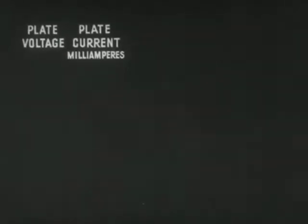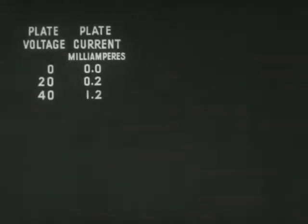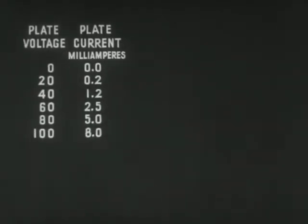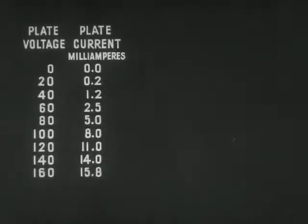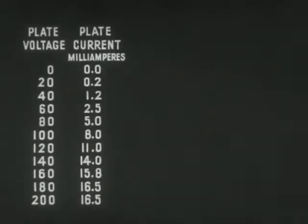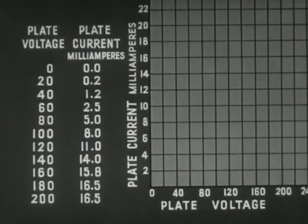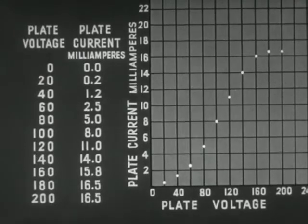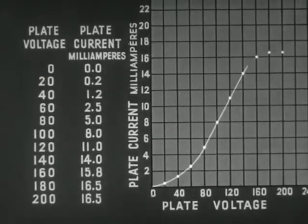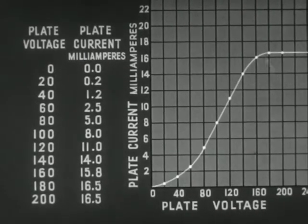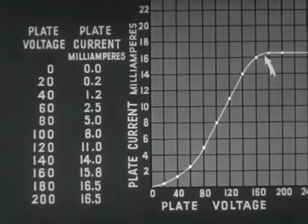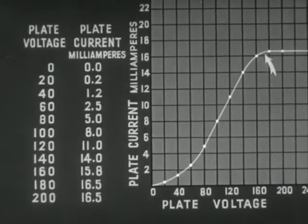If the voltage on the plate is increased, the plate current will increase since more electrons will be attracted because of the higher positive charge. With ordinates representing voltage and current, we can trace a curve to show this relationship. Note the saturation point beyond which there is no increase in the plate current even when the voltage is increased.